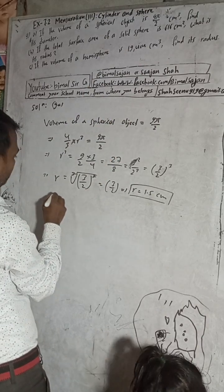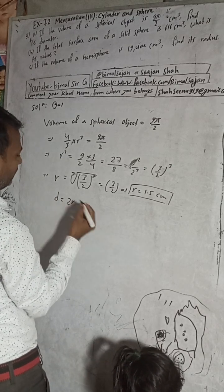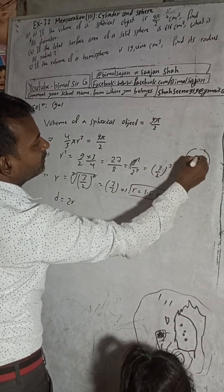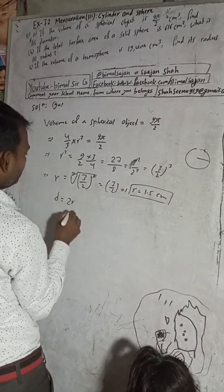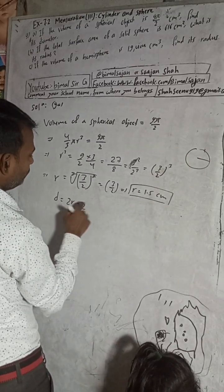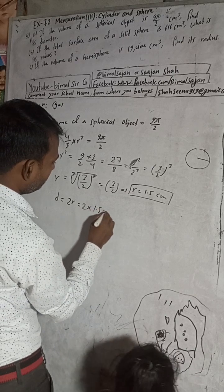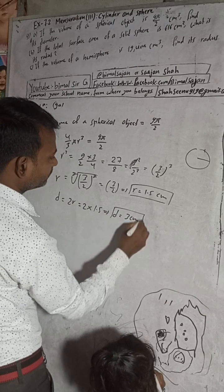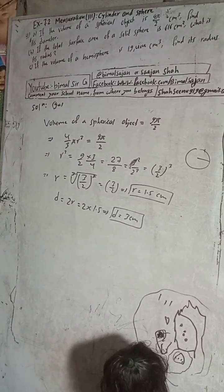Find its diameter. Then diameter, d is equal to, diameter means double of radius. Radius means half, and full double means this is called diameter. So diameter is equal to 2 and r, 2 times 1.5, this implies d is equal to 3 cm. So this is the solution of this question 9a number.